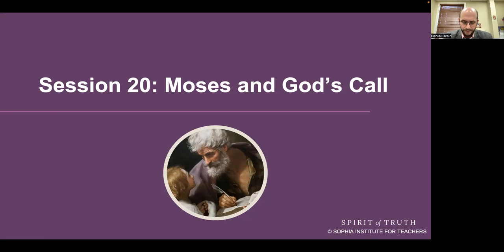Our Father, who art in heaven, hallowed be thy name. Thy kingdom come, thy will be done, on earth as it is in heaven. Give us this day our daily bread, and forgive us our trespasses, as we forgive those who trespass against us. And lead us not into temptation, but deliver us from evil. Amen. In the name of the Father, and of the Son, and of the Holy Spirit. Amen. Take care, and God bless.